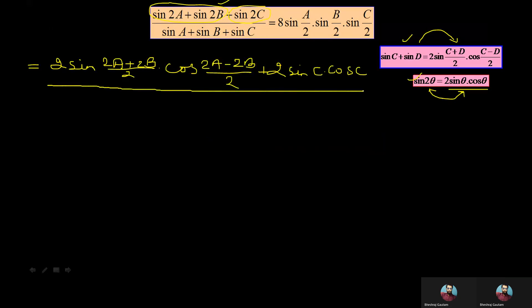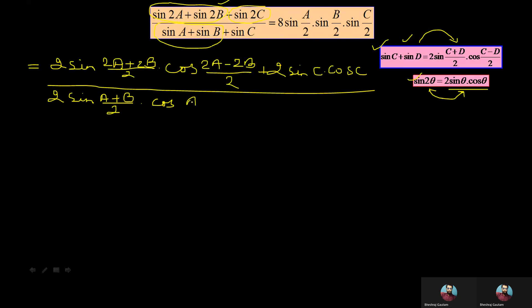Now the first two trigonometric ratios of the denominator will be combined with the same sum-to-product formula, and we can write that as 2 sin((A+B)/2) into cos((A-B)/2). Similarly, sin C is compared with the double angle formula and written as 2 sin(C/2) into cos(C/2).